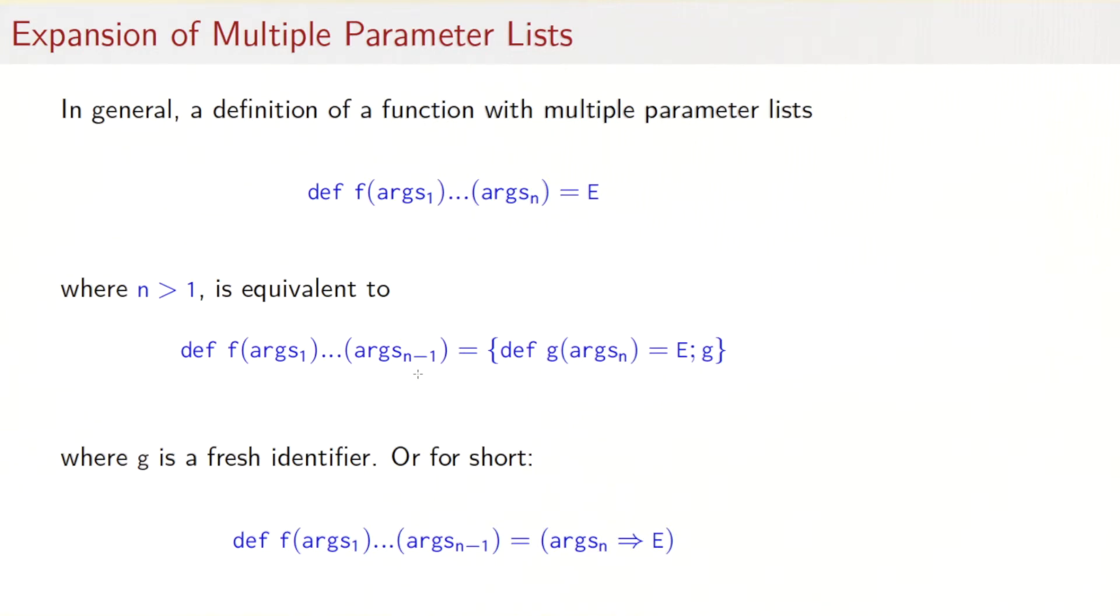Or, for short, we can just write an anonymous function. So the definition up here would also be equivalent to the definition that you see down here, where the last parameter list is the parameter list of an anonymous function that maps to e.